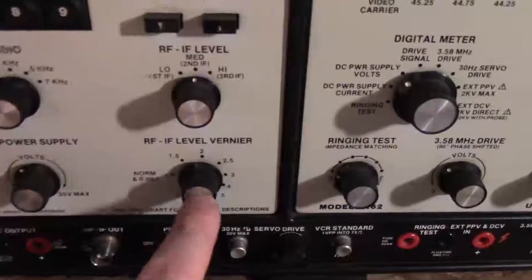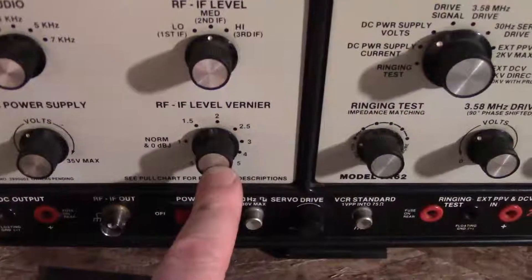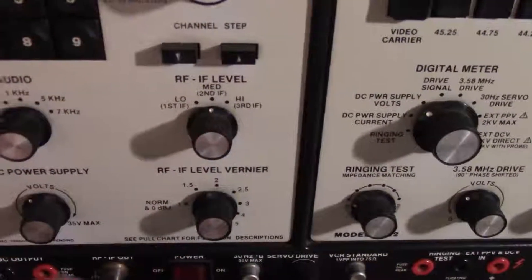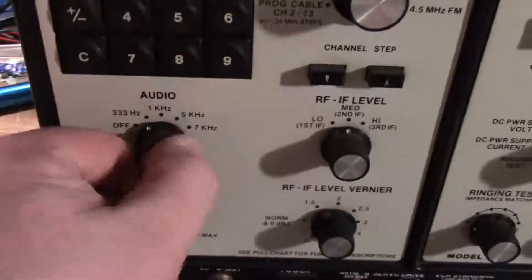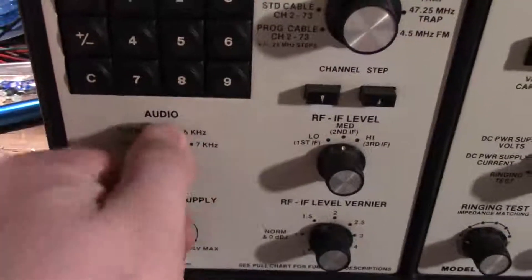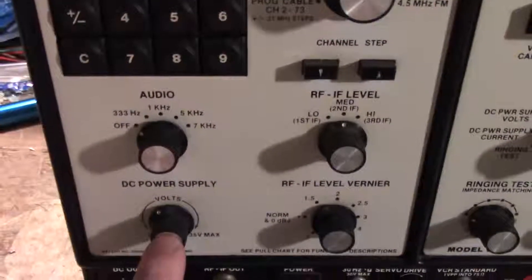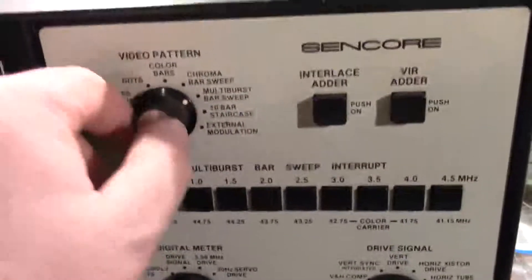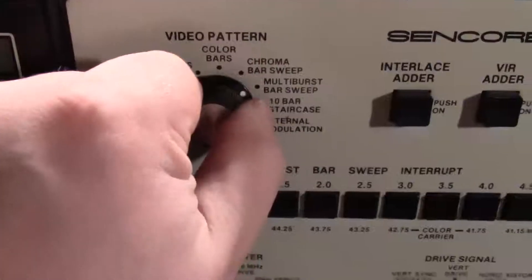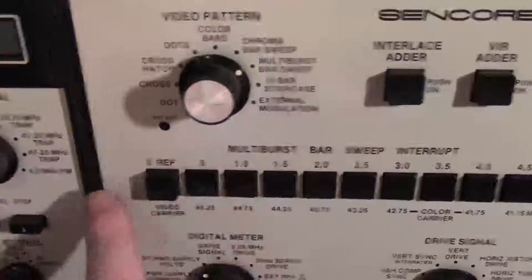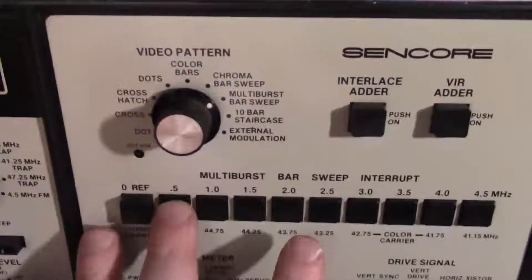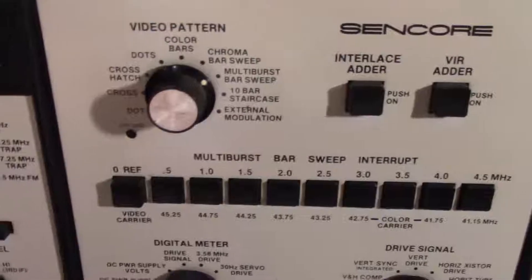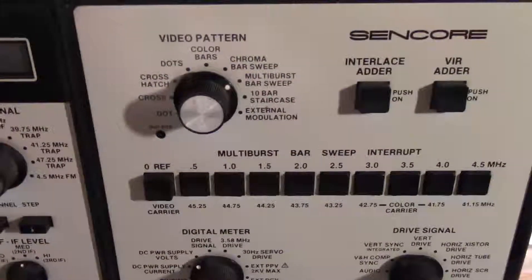You also have a kind of an attenuator, although the ranges do not overlap. Variable audio input to the signal for RF and IF, and DC power supply. Lots of video patterns, multi-bursts. You get bars all the way from 0 MHz up to 4.5, so you can test the video frequency response.